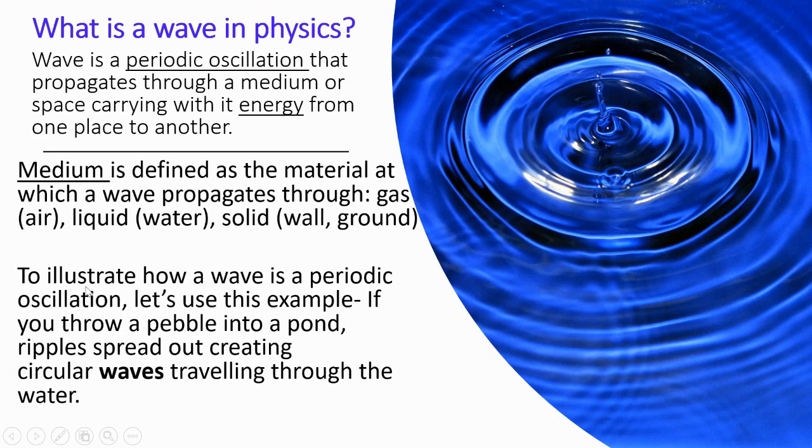To illustrate how a wave is a periodic oscillation, let's use this example. If you throw a pebble into a pond, ripples spread out, creating circular waves traveling through the water. So the water here is the medium.